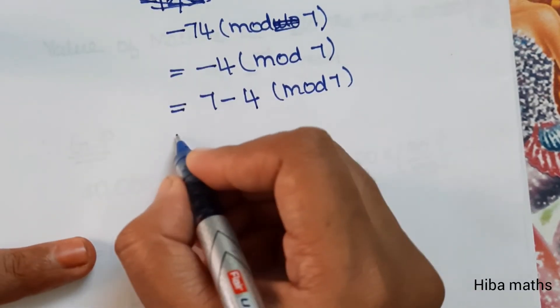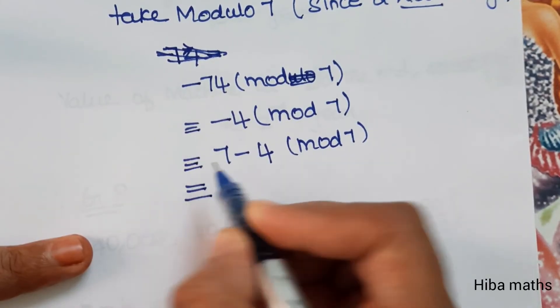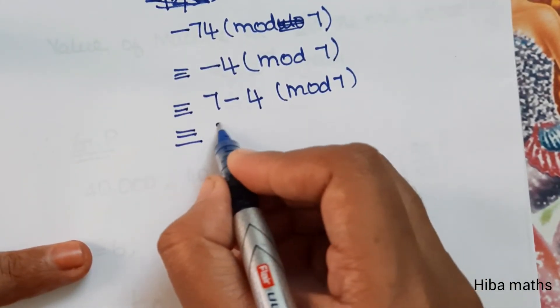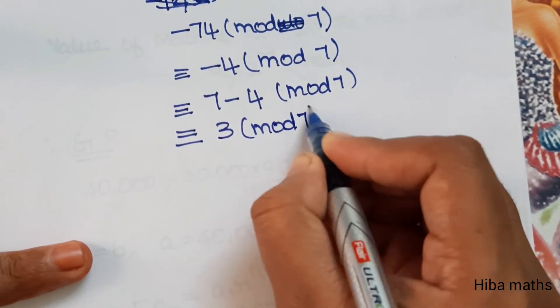Weekdays repeat every 7 days, so this is congruent to 3 modulo 7.